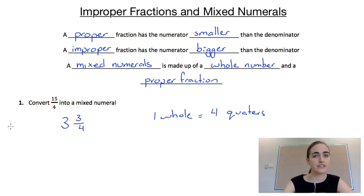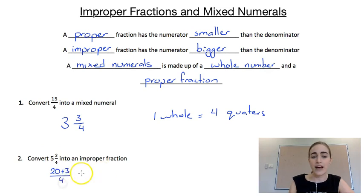Let's have a look at another example. Our second example is going the other way. We're going to start with this mixed numeral of 5 and 3 quarters, and we're going to convert that into an improper fraction. We want to see how many quarters fit into 5 wholes. Because there's 4 quarters in 1 whole, we can do 5 times 4 to get 20 quarters. And we've also got these 3 quarters here. So we're going to have, in total, 23 quarters, or 23 over 4.